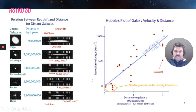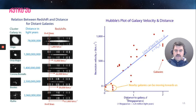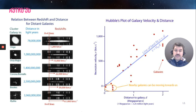It's interesting to note that with recessional velocity, we have a few objects below zero on this graph with negative recessional velocity, which actually means those objects are moving towards us. An example of that is the Andromeda galaxy, our neighboring galaxy in the night sky. We're in the Milky Way galaxy, and Andromeda is actually moving towards us — so instead of a recessional velocity, it's actually coming toward us.